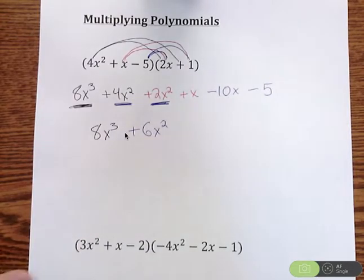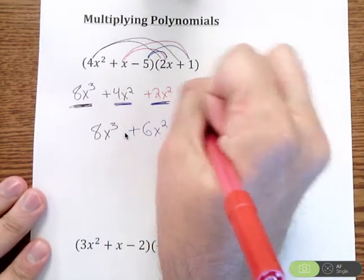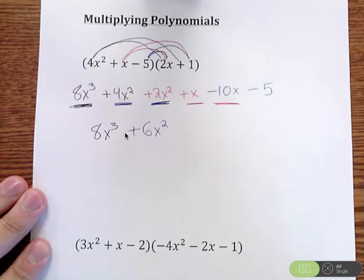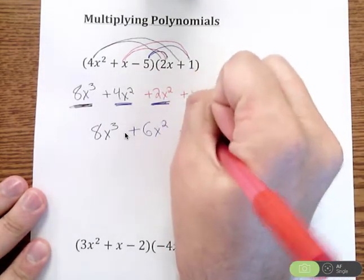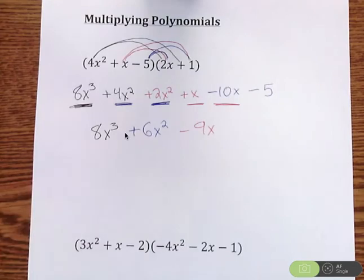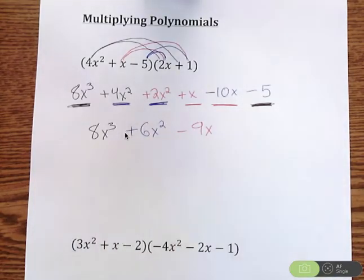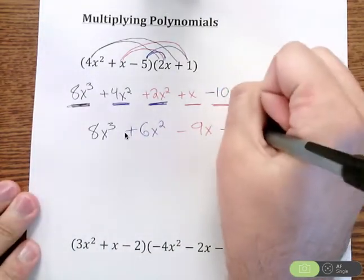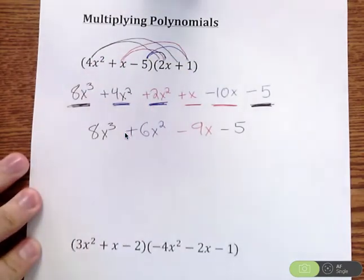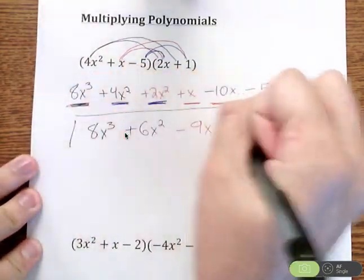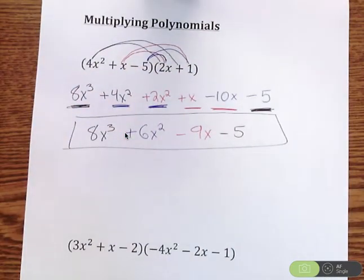After x² come x's. I have x minus 10x, which is negative 9x. Then last, we have our constants, which is negative 5. No other constants, so minus 5. When you multiply those two polynomials, we get 8x³ + 6x² - 9x - 5. This is also in standard form.